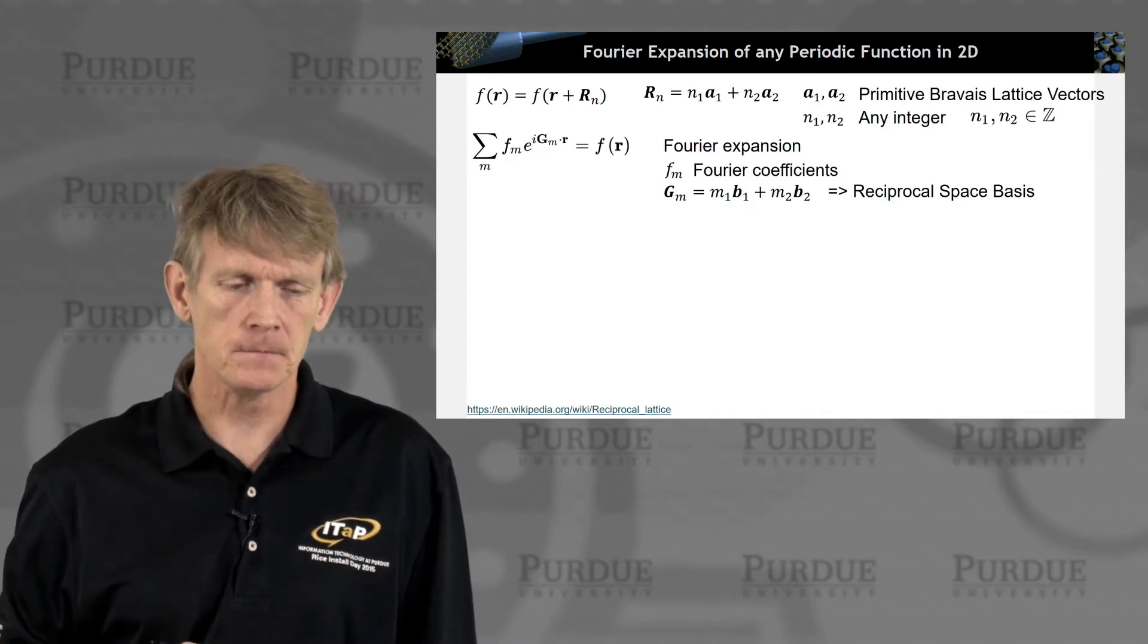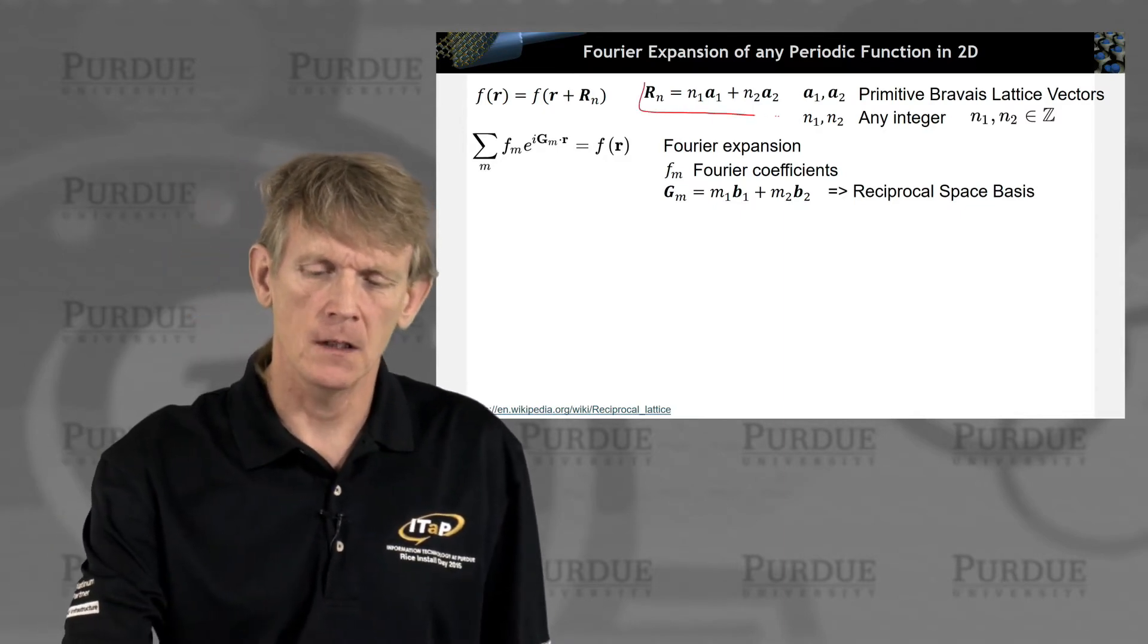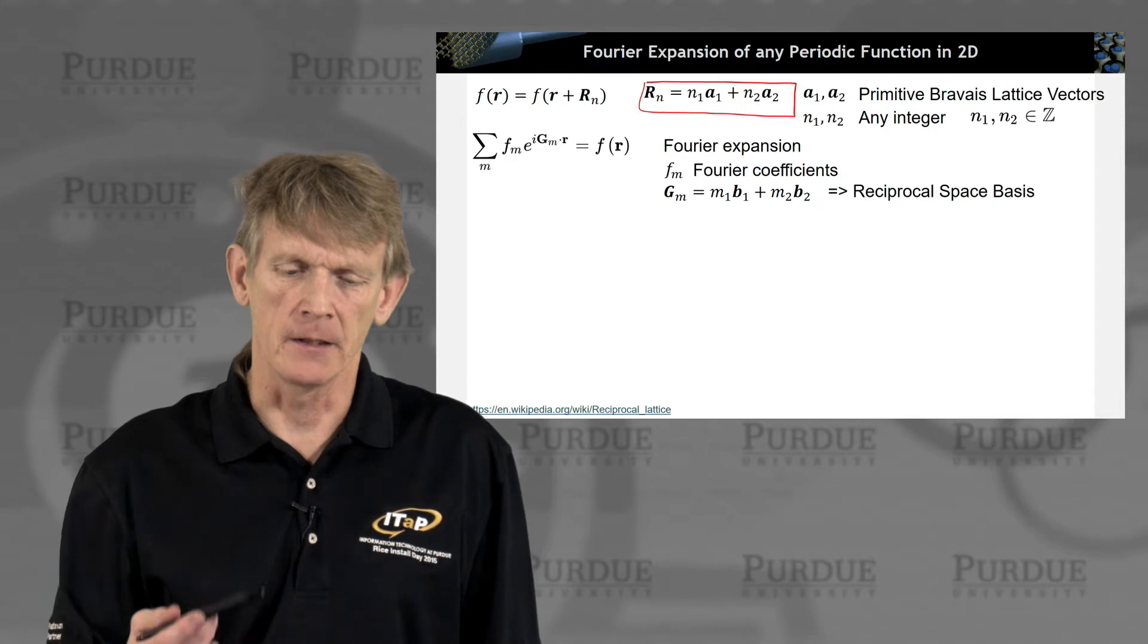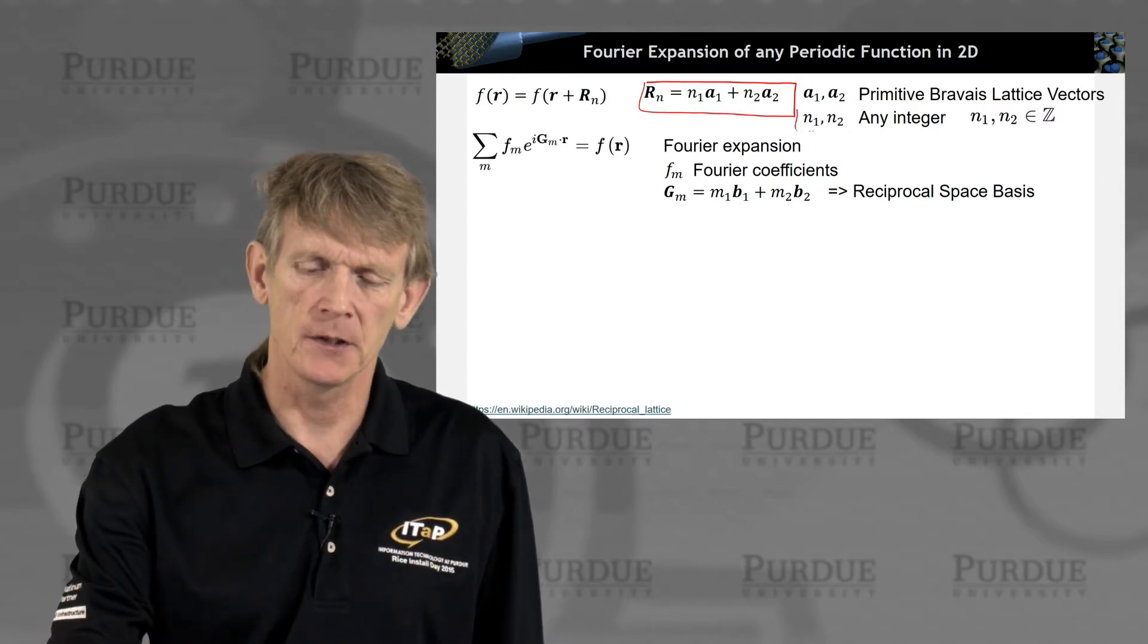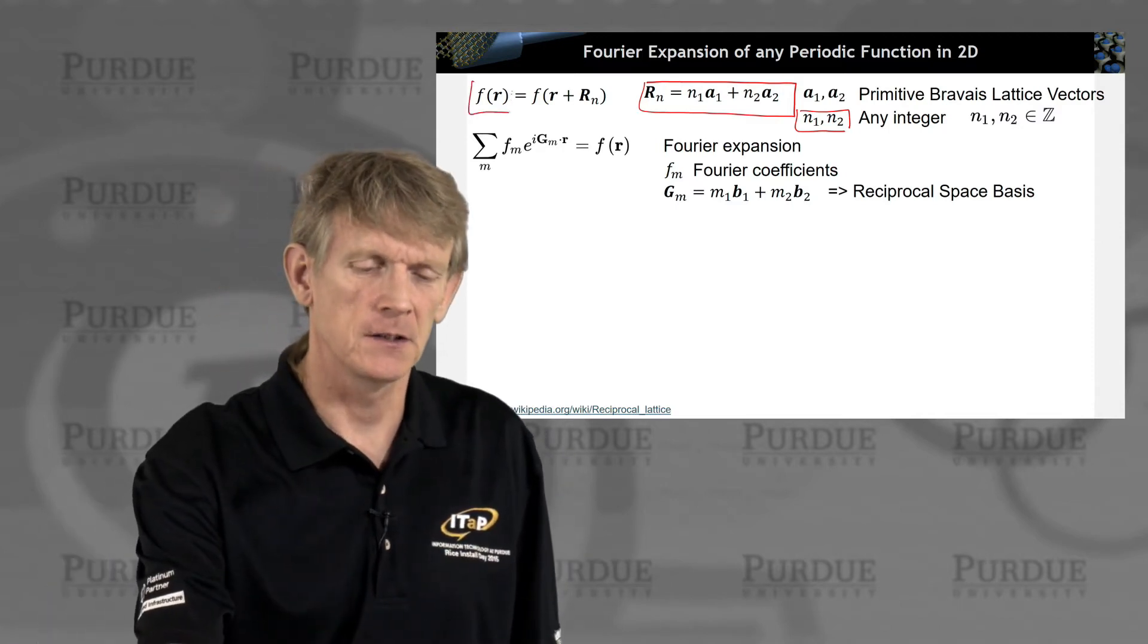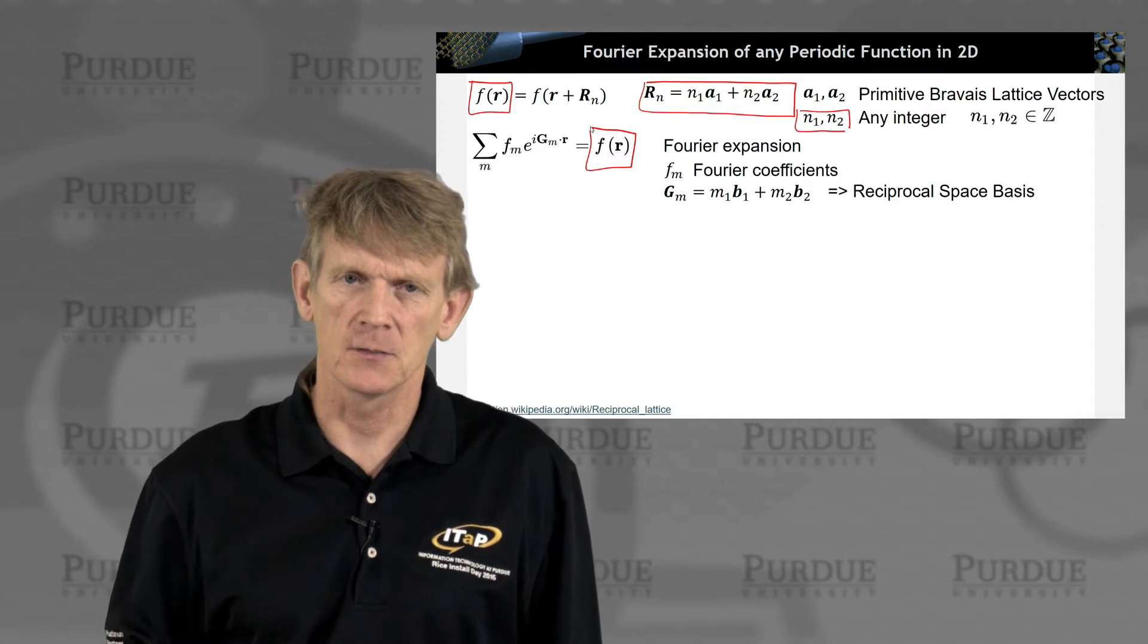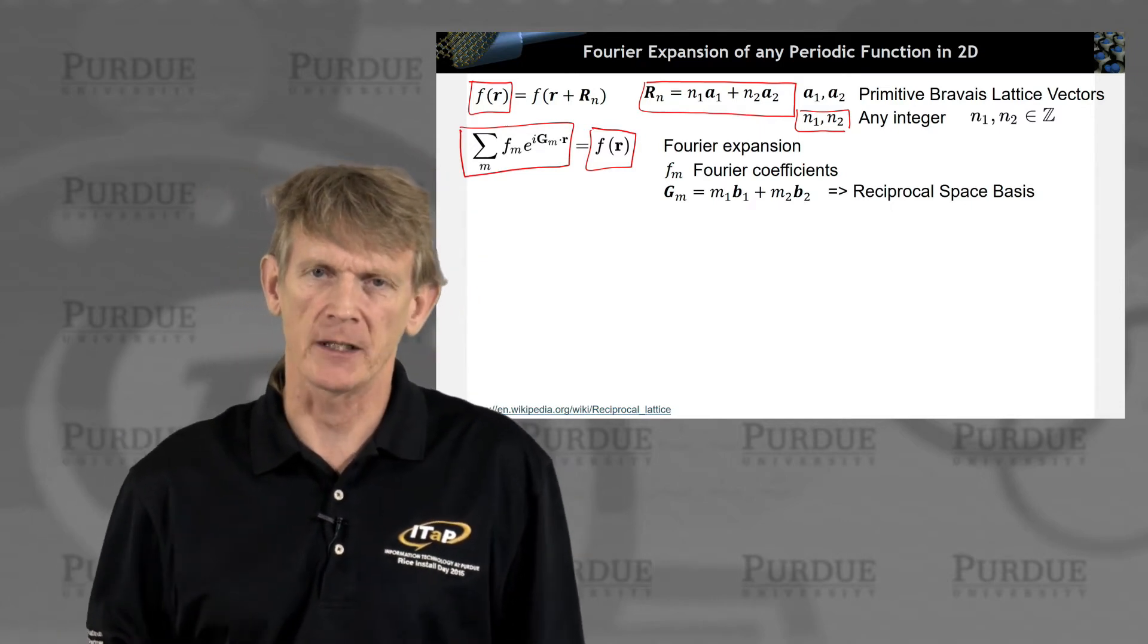So now let's expand this into two dimensions. We consider a function that is repeated in real space by a Bravais lattice, by a lattice vector in two dimensions. So a1, a2 span open the primitive Bravais lattice vectors in two dimensions. Any of these two integers, n1 and n2, map you back to the original function that is just inside your single unit cell. Ultimately, we want to represent this function f that is living on that space into coefficients that are representative of the spatial spectrum.